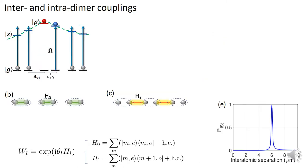The gradient of exchange interaction causes a level shift that depends on the distance of sites from the quantum walker. By tuning the energy of the global laser, we can ensure that only the desired site gets excited to the S Rydberg level and undergoes the quantum walk. This gives a tool to apply inter- and intra-dimer coupling tessellations, as seen in figures B and C.